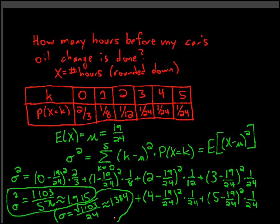So there's an example of how to calculate variance and standard deviation for a finite discrete distribution. Here's my standard deviation. Thank you, everyone.